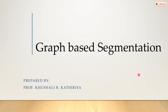So first of all, what is a graph? A graph consists of nodes, which are also called vertices. Nodes are connected with one another through directed or undirected edges, and in any environment these nodes are connected with one another.